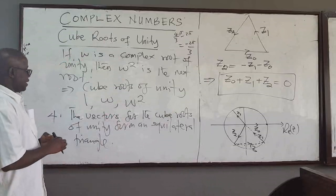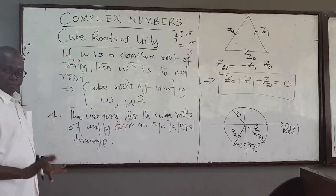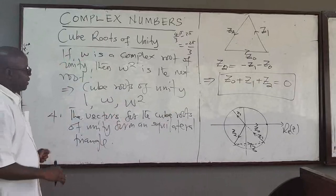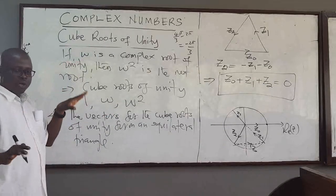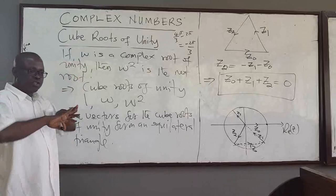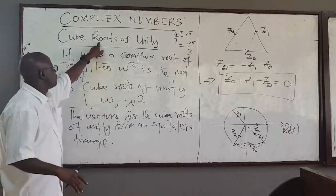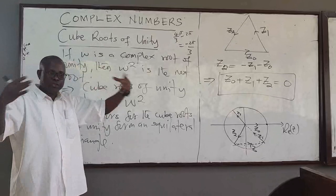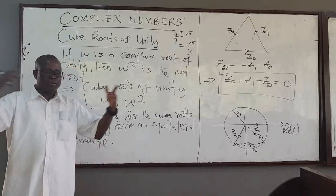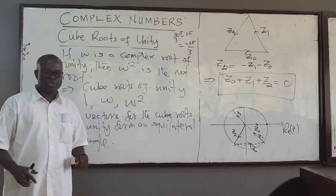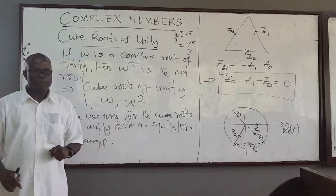So we are back to the original result: when you add the roots of a complex number, they all add up to zero. This is because they form the sides of a regular polygon. That is the cube root of unity, with some very interesting properties. In the next lecture, we want to broaden this and look at the nth root of unity — not just the cube root — and examine its properties as well. See you in the next lecture.